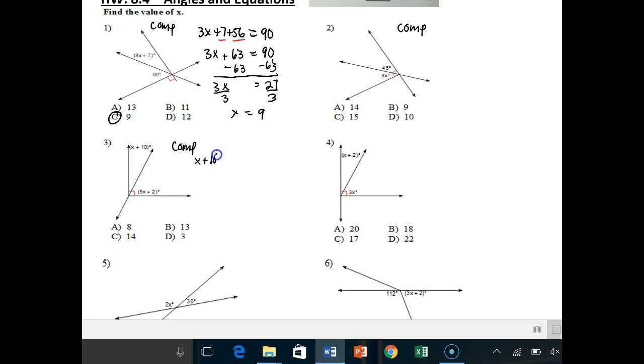So x plus 10 plus 5x plus 2 has to add together to equal 90 degrees. We find our like terms. x and 5x is 6x. 10 and 2 is 12. That has to add up to 90 degrees. So we subtract 12 from both sides. We get 6x is equal to 78. We divide by 6 and we get x is equal to 13.